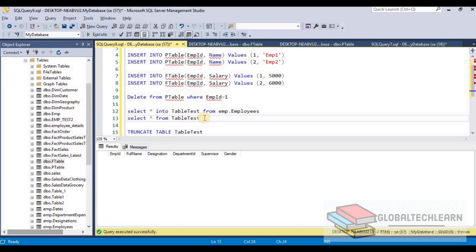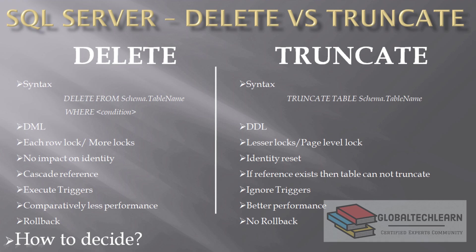This raises the question: why does TRUNCATE exist if DELETE can also remove all records? The key differences are: DELETE is part of DML and deletes row by row, while TRUNCATE is part of DDL and works at the table level, removing complete data pages. Also, DELETE locks each record individually, whereas TRUNCATE locks the complete page or the whole table, resulting in fewer locks and better performance.